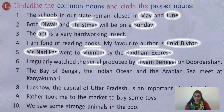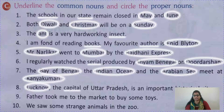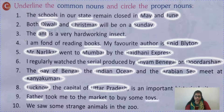Seventh sentence: 'The Bay of Bengal, the Indian Ocean and the Arabian Sea meet at Kanyakumari.' Bay of Bengal, Indian Ocean, Arabian Sea, and Kanyakumari are all proper names. Eighth: 'Lucknow, the capital of Uttar Pradesh, is an important historical city.' Lucknow and Uttar Pradesh are proper names; 'capital' and 'city' are common nouns. Ninth: 'Father took me to the market to buy some toys.' Father, market, and toys are common names. Tenth: 'We saw some strange animals in the zoo.' Animals and zoo are common nouns.